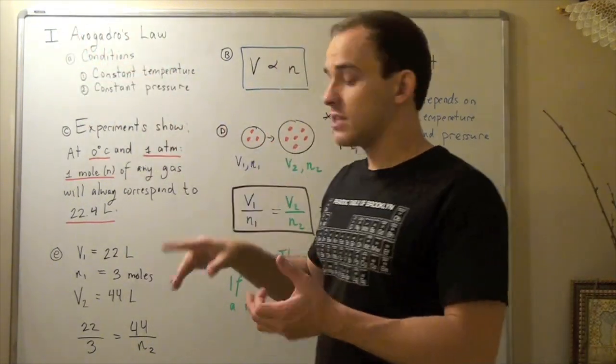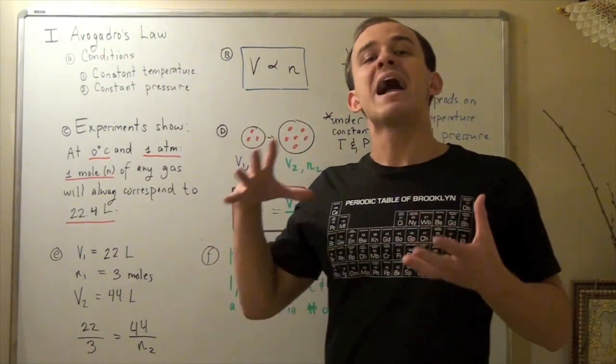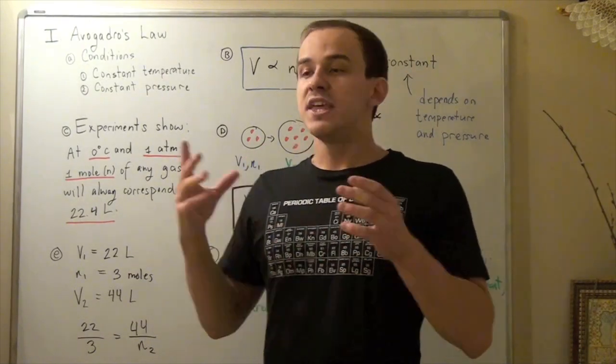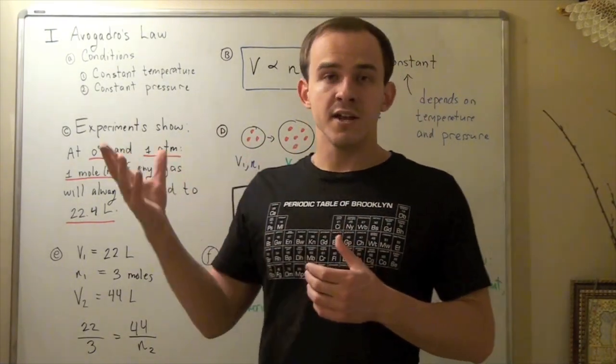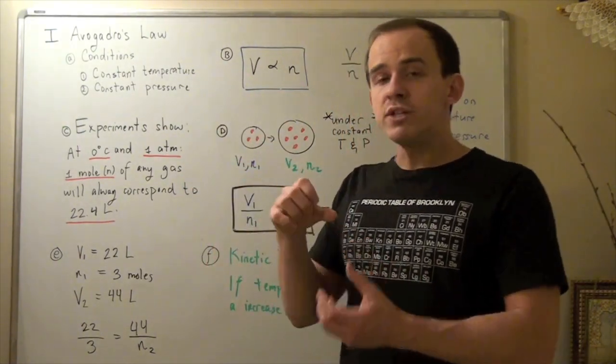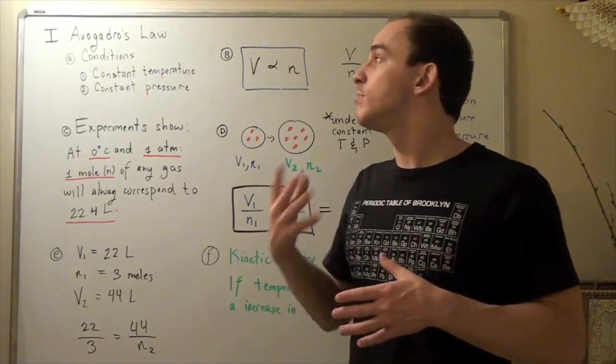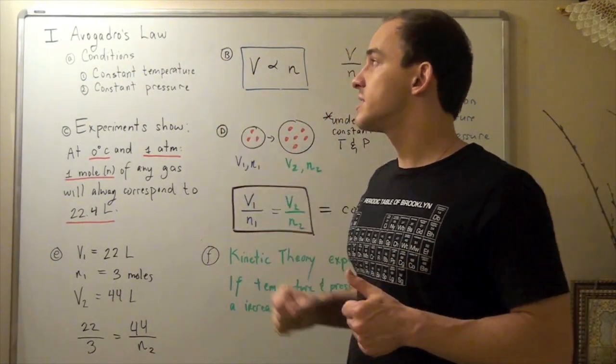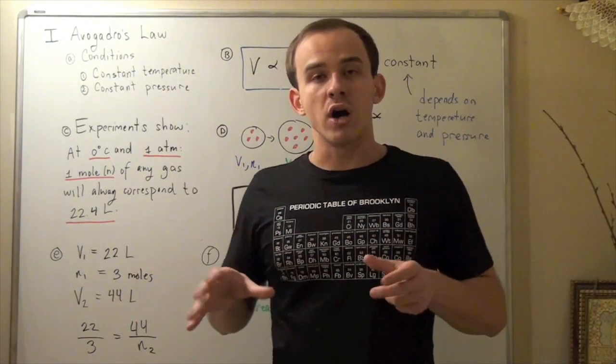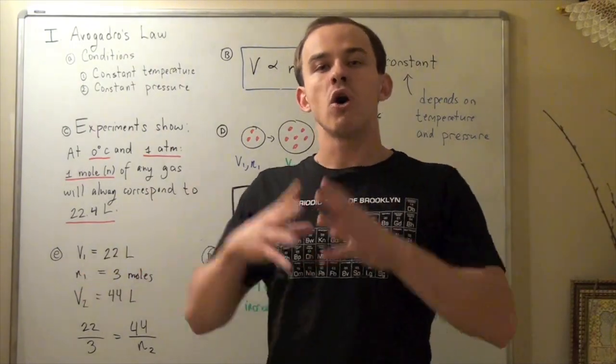Now these laws, Avogadro's, Charles, and Boyle's law, all explain macroscopic concepts. Things that you could see and feel and hear. For example, a balloon popping when you're putting pressure on it, or a balloon inflating when you're putting in more moles. Things like that are explained by these three laws. Next, we're going to look at an overall law called the ideal gas law, which incorporates all three laws.